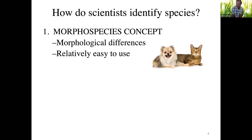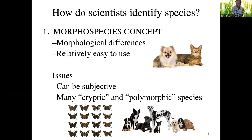For example, a cat and a dog look very different, so we call them different species. That's relatively easy to use when species look very different from one another. The downside is it can be very subjective in the types of characters used to define one species versus another, and it's often very difficult when you have cryptic or polymorphic species.